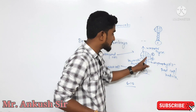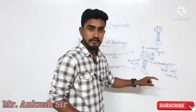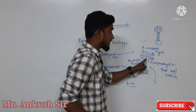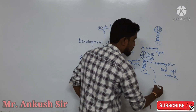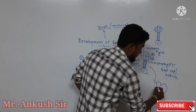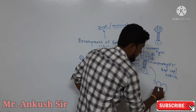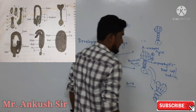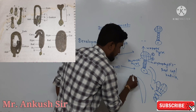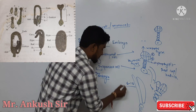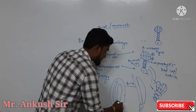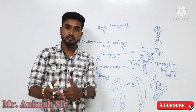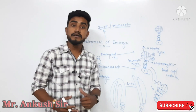Hypophysis means root cap and the radicle part — it is the root portion. It is simple. The lower part gives rise to the root system and the upper part gives rise to the shoot system. These structures are distinct parts of the developing embryo.